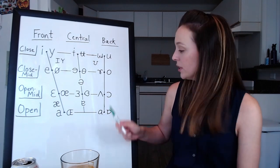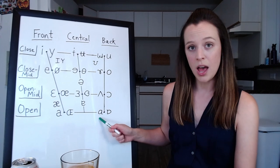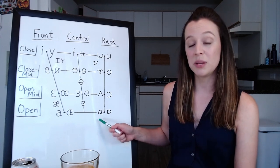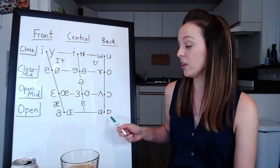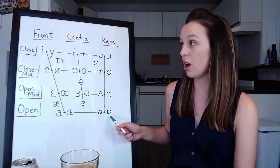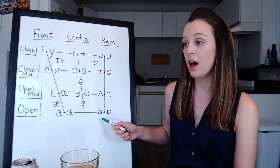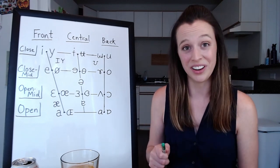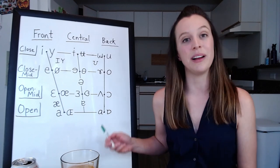So, an example. The ah, as in father, is unrounded, but if you round your lips in that same position with your tongue, you'll get the ah, as in lot, cloth. Ah, ah, that one's slight, but it's different, and it's different because of the rounding of your lips.